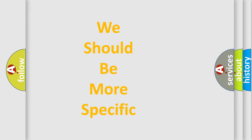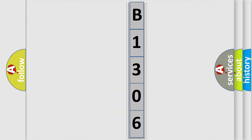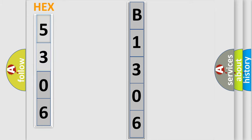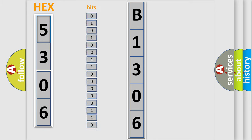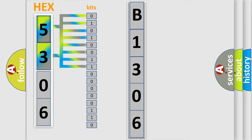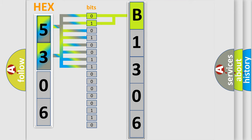The following demonstration will help you look into the world of software for car control units. The error code is split into two bytes consisting of 16 bits. One bit is the basic unit that each computer works with. The bit has two logical states: zero, meaning low level, and one, meaning high level. By combining the first two bits, the basic character of the error code is expressed.